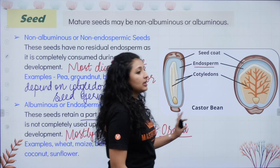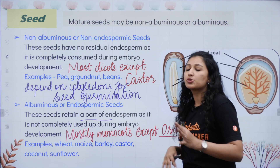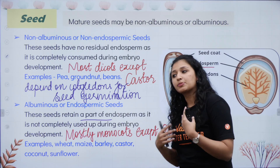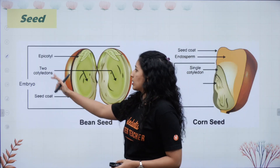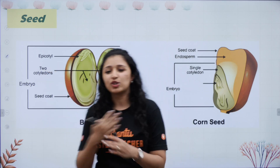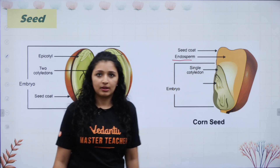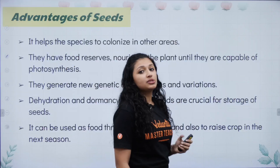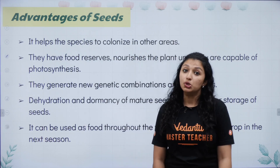In endospermic seeds, the endosperm serves for seed germination. So we have two types of seeds: endospermic and non-endospermic, based on whether endosperm is retained. In monocots the cotyledon is very small or is called a scutellum and is not of much use — they need the endosperm as food. That is why most monocot seeds have a large endosperm.